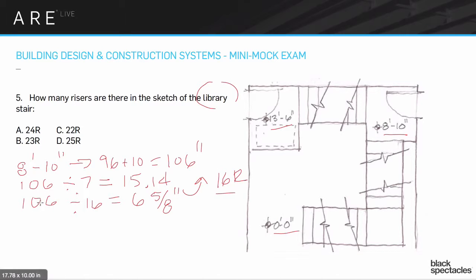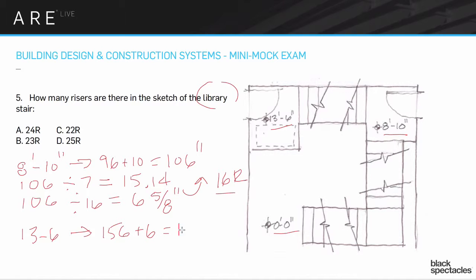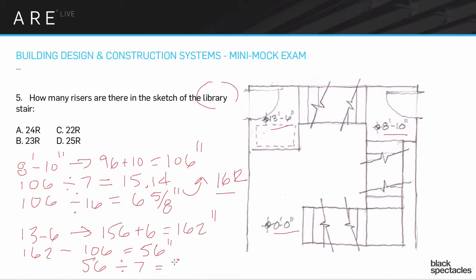For the second run, 13'6" is equivalent to 156 plus 6, which is 162 inches total from zero up to the upper landing. But we only care about the rise from 8'10" up to 13'6", so we take 162 and subtract 106, giving us 56 vertical inches. We divide 56 by 7, hoping it works out evenly — and it does: we get exactly 8 risers at 7 inches each.